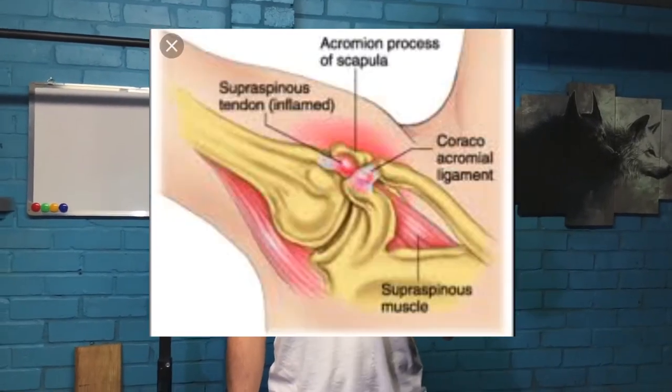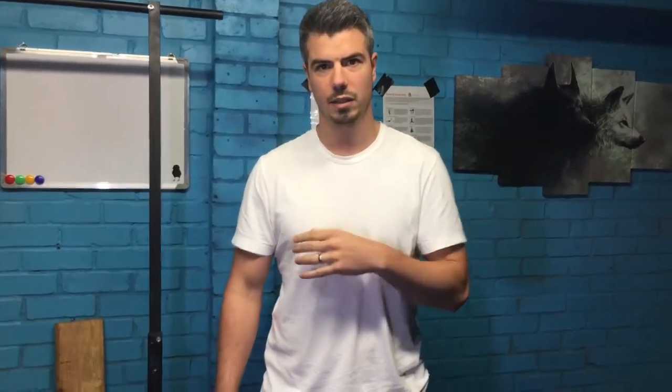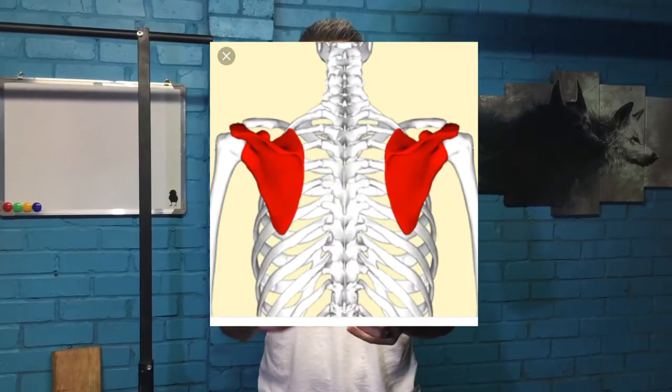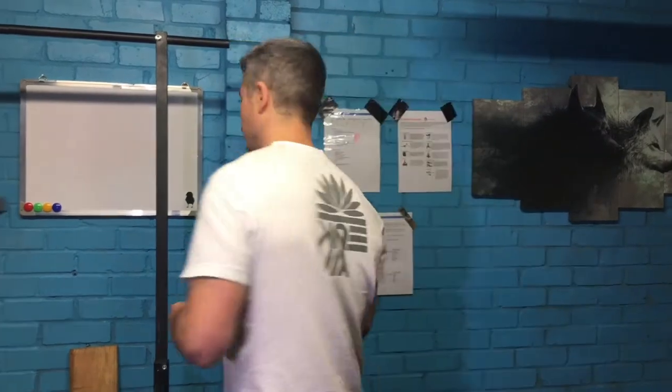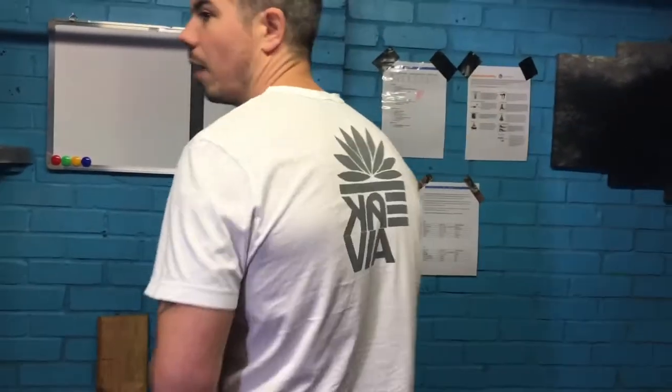The most common shoulder issue is impingement — I'm putting a picture of that up on screen now. It's when some of the tendons on the rotator cuff get caught in what's called the subacromial space, which is a small space that lots of the rotator cuff tendons pass through. This can be addressed by improving the way that the scapula — the shoulder blade — moves. Many people have poor scapula mechanics, which leads to the scapula slipping forwards, making the subacromial space get smaller and more likely to trap the tendons in there.